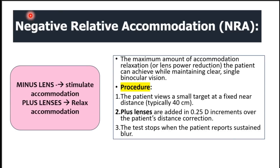Let's talk about the negative relative accommodation, also abbreviated as NRA. The key thing to remember is that minus lenses stimulate accommodation and plus lenses relax accommodation. The maximum amount of accommodation relaxation, or lens power reduction, that the patient can achieve while maintaining a clear single binocular vision is known as the negative relative accommodation.